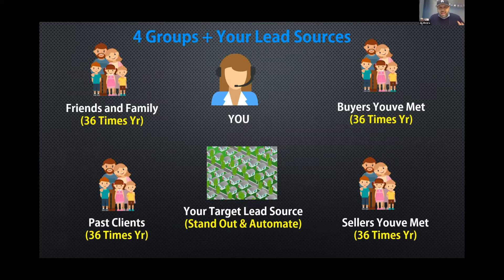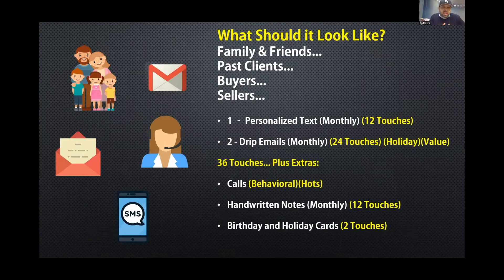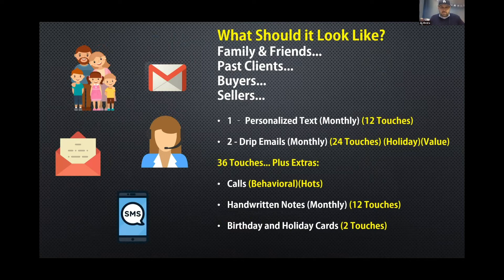At a bare minimum, I would reach out to that buyer at least 36 times a year. You could use phone calls, mail, visits, parties — but at bare minimum, this is what we're doing to get great success with LionDesk. The first thing you want to do is use the video text feature, and you're going to send one video text to your buyers every single month.